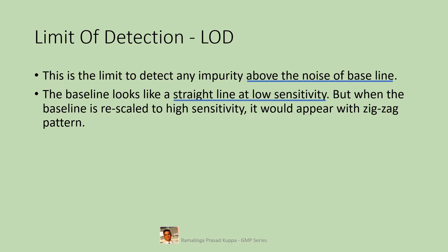The noise is the roughness of the baseline. The baseline looks like a straight line at low sensitivity, but when rescaled to high sensitivity it appears with a zigzag pattern. Did you notice the baseline in an HPLC or GC chromatogram on the monitor screen while an analytical run is in progress? At low sensitivity the baseline looks almost like a straight line, but at high sensitivity it looks like a hair comb in a zigzag pattern.